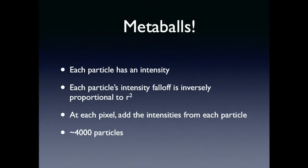The metaball stuff — basically, for each particle in your system, you calculate at any point on the screen what the additive intensity is from every other particle, when you incorporate a 1/R² fall off. There are about 4,000 particles. So that was the first iteration, and I ended up with half a frame a second — that was a bit crap.